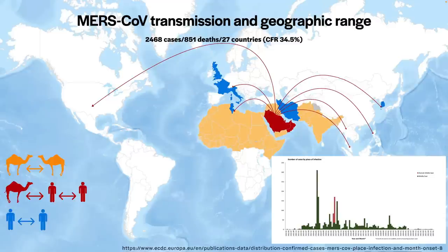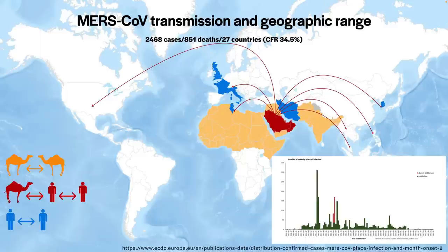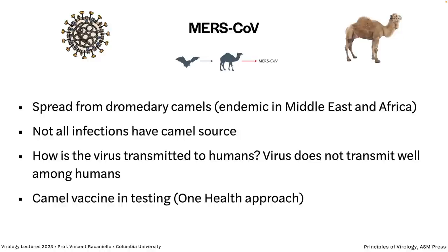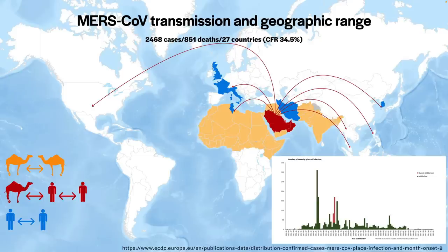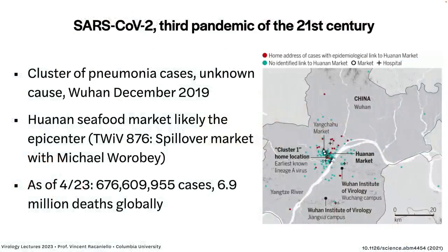MERS doesn't spread well from human to human. The solution is to vaccinate camels — just like with Hendra, vaccinate the source. Most MERS cases are in the Middle East. Korea had the biggest exported outbreak when a man returning from the Middle East went to a hospital while incubating the virus — they didn't isolate him, and he infected others. It's not sustained outside the Middle East, where the camels are. Since 2012: 2,468 cases in 27 countries, 851 deaths. Camels probably got the virus from bats at some point, perhaps hundreds of years ago.